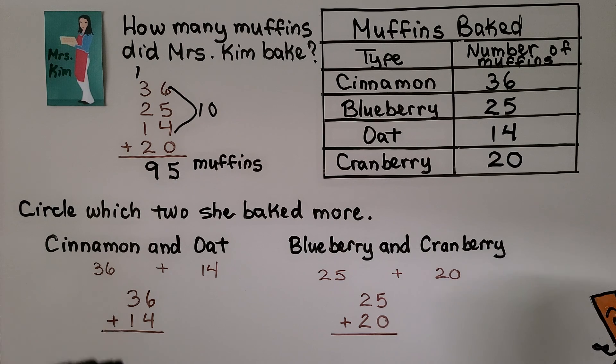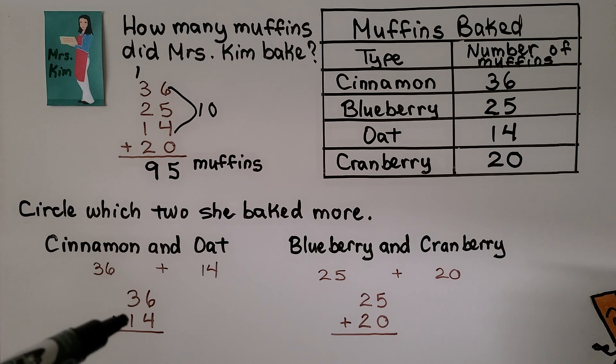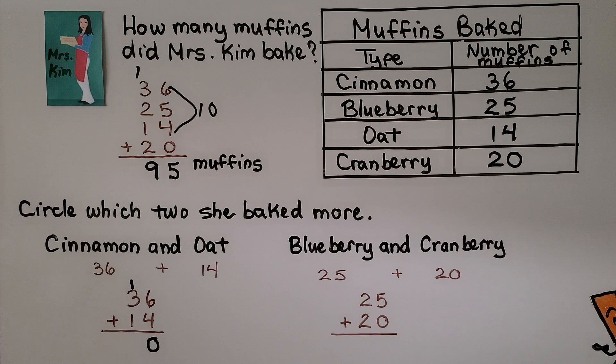We can rewrite them into—this is called the standard algorithm. We have them stacked in place value columns. We can add 6 plus 4, which is equal to 10. We regroup the 10 and put 0 in the ones place. Now we add the tens column: 3, 4, 5. That means for cinnamon and oat, there are 50.